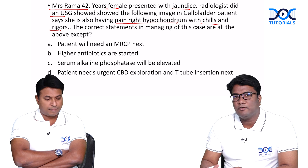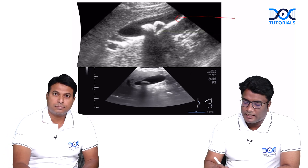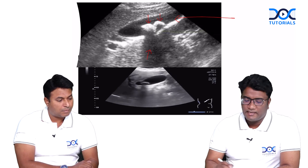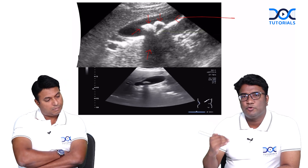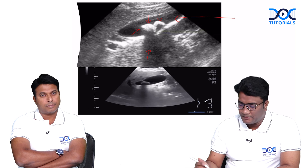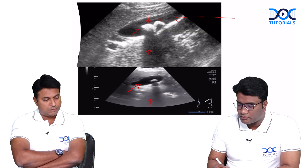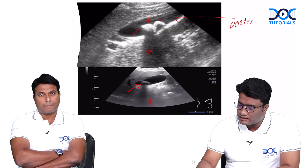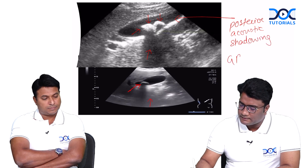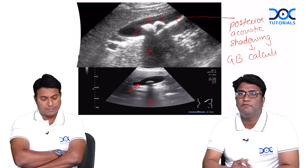Looking at the ultrasound image, this shows the gallbladder. Within the lumen you can see hyperechoic areas with posterior acoustic shadowing on the dependent portion of the gallbladder. When you have a hyperechoic area within the lumen, especially on the dependent portion, with posterior acoustic shadowing, this represents GB calculi — gallbladder stones. Remember: S for S — shadowing is a feature of stones or calculi.